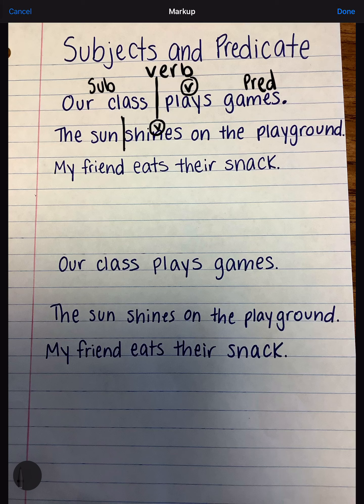Let's look at the last sentence. My friend eats their snack. Which word is the verb? In this sentence, eats is the verb. So where should we draw our line? We're going to draw our line right before the word eats. My friend is the subject. Eats their snack is the predicate.